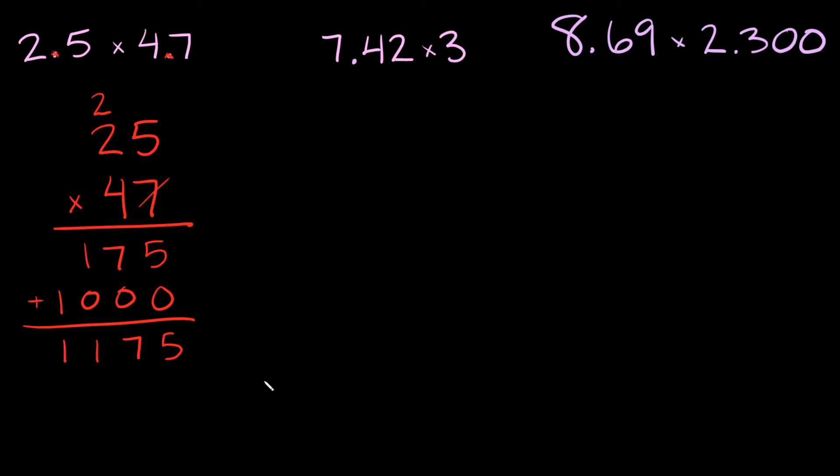Now we're almost done. The last thing we have to do is put our decimal number in there. How do we do that? Go back to your original problem, 2.5 times 4.7. Now how many decimal numbers do we have? Well we have 1, 2. We have two decimal numbers. So what we're going to do is come down to our answer. We're going to come down to the end of the number. How many decimal numbers did we have? 1, 2. So that means we're going to move two spaces to the left.